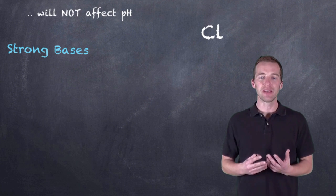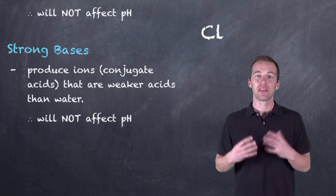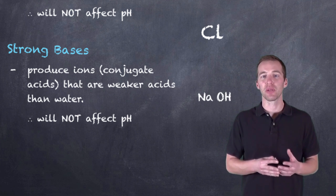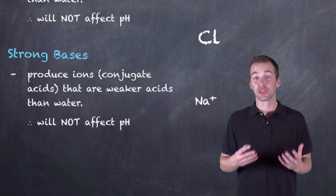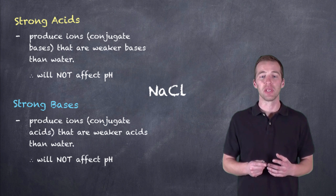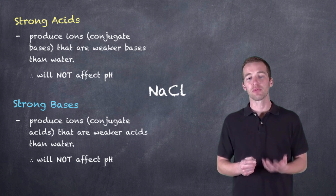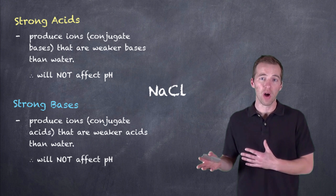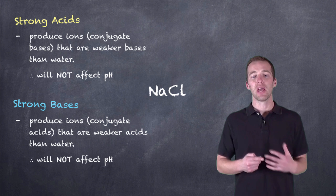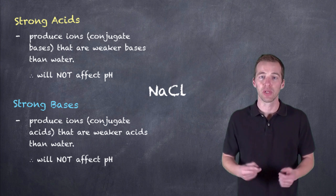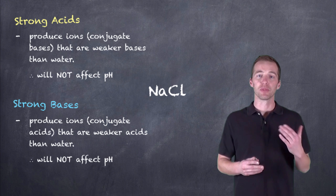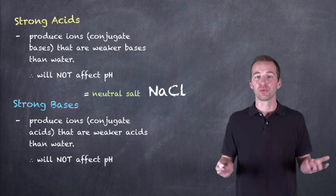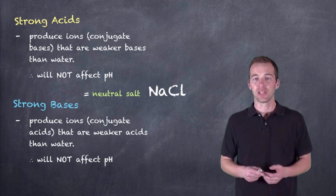In the case of strong bases, we have conjugate acids that are also going to be weaker than water, and therefore they're not going to affect the pH. So in the case of the conjugate for sodium hydroxide, your conjugate is going to be the sodium ion, which is weaker than water and not going to affect the pH. What we see with these two things is that the hydrogen and the hydroxide of the strong acid and the strong base will form water, and then sodium and the chloride ion will come together to form our salt, sodium chloride. Because sodium chloride has been formed from a strong acid and a strong base, it is a neutral salt and does not affect the pH of the solution.